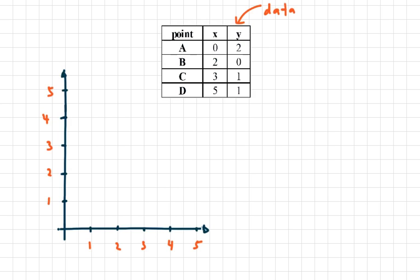Let's try an example with a simple dataset of four points with x and y coordinates. Point A is (0, 2), point B is (2, 0), point C is (3, 1), and point D is (5, 1). So I have four data points plotted in the coordinate space.